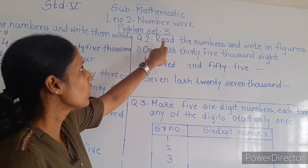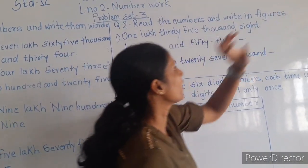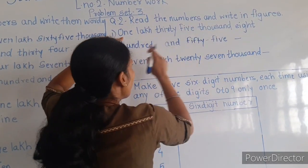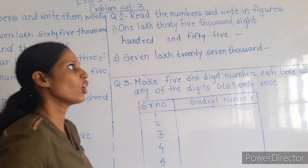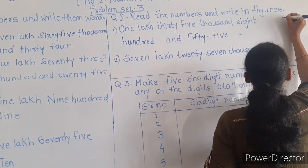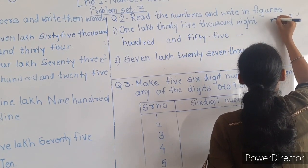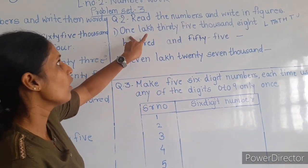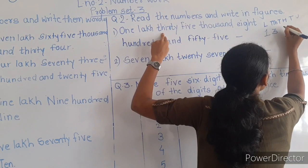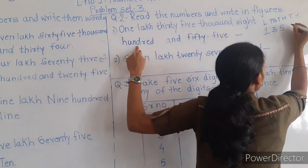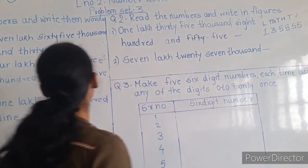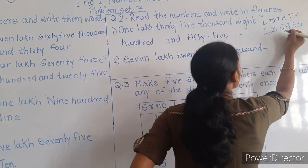Now moving on to question number 2: read the numbers and write in figures. You have to read the number and write it as a figure. The first one is 1 lakh 35,855. First of all, write the place value — unit, ten, hundred, thousand, ten thousand, lakh. Now what is given: 1 lakh, 35,000, 800, 55.